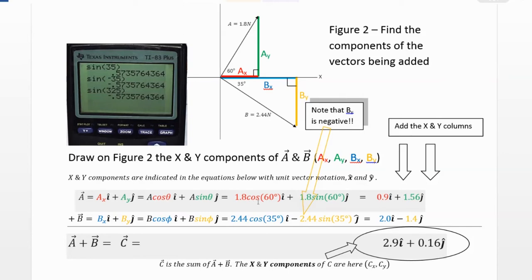Okay, so plugging in the numbers, we see that my x and y components of vector A are 0.9 in the x direction and 1.56 in the y direction, both of them being positive. And that's what we see. Ax is in the positive x direction, Ay is in the positive y direction.